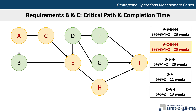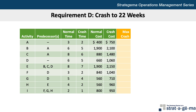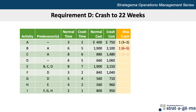Now comes the fun part, as we take on requirement D to crash the project by 3 weeks to 22 weeks, since we know our project completion time is 25 weeks. The first step is to determine the maximum crash time for each activity, which is calculated by subtracting the crash time from the normal time. The crash times listed represent the shortest possible time an activity can be completed. For activity A, our normal time is 3 weeks and it can be crashed down to a minimum of 2 weeks, making our maximum crash time 1 week. For activity B, the maximum crash time is also 1 week, calculated as 6 weeks normal time less 5 week crash time. Activity C has a maximum crash time of 2 weeks, calculated as the 8 week normal time minus the 6 week crash time. All remaining activities D through I have a maximum crash time of 1 week, except for activity H, which can be crashed by 2 weeks.